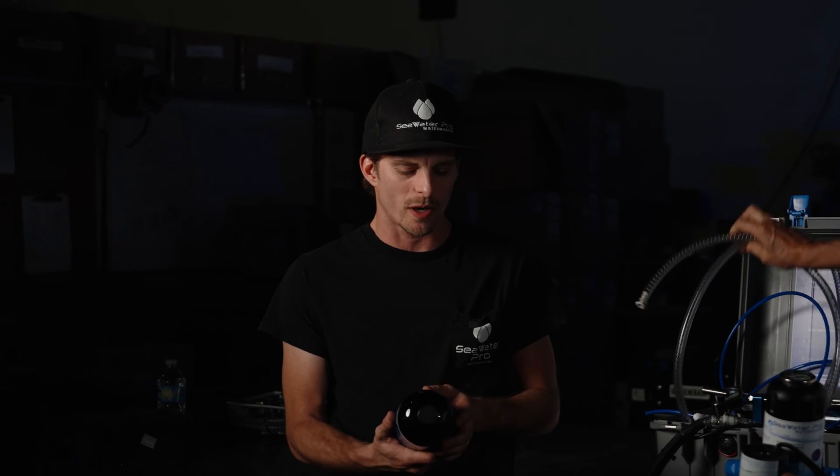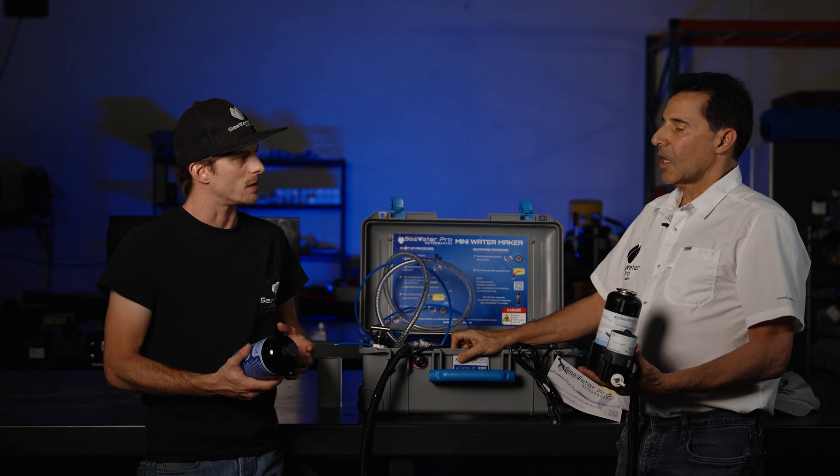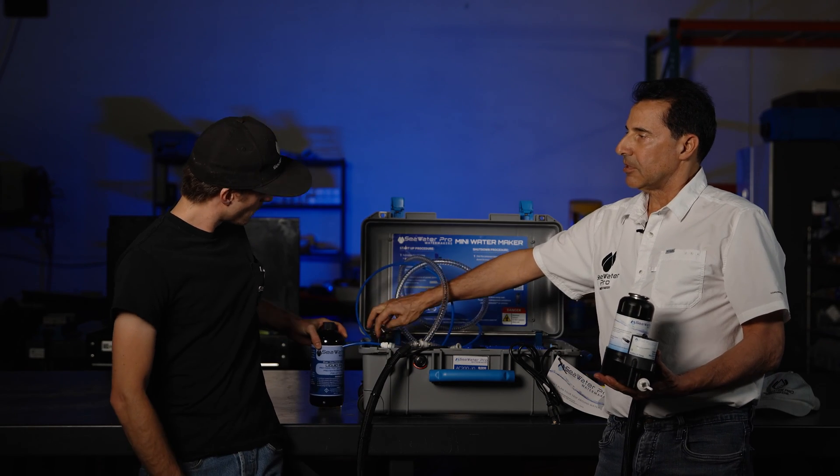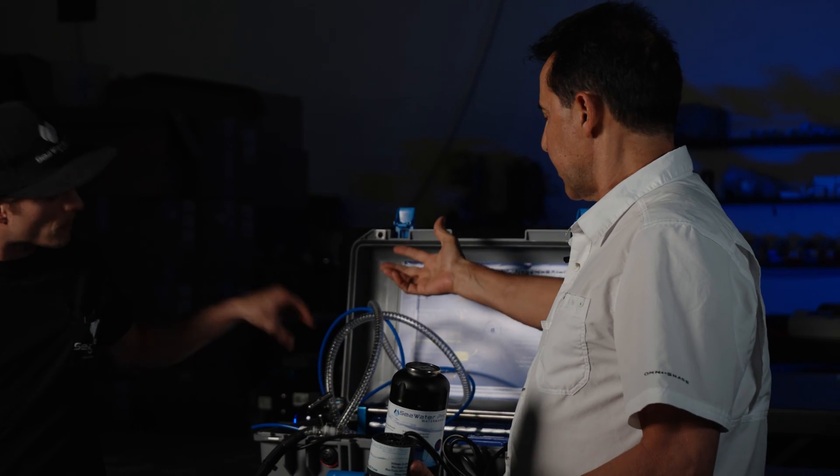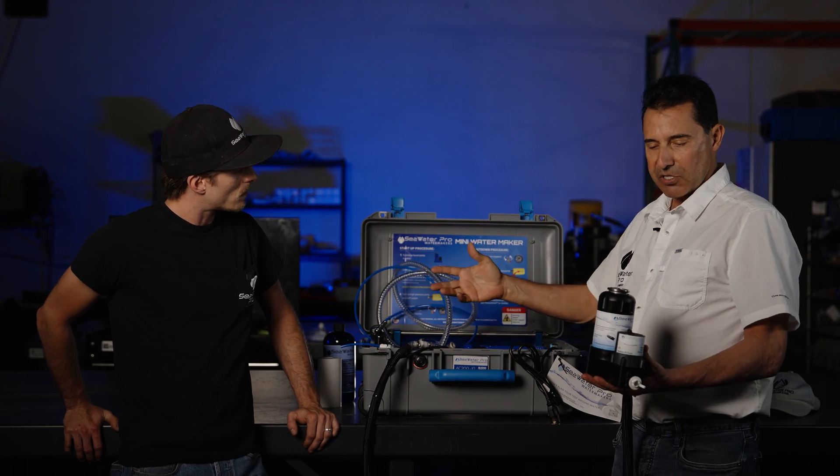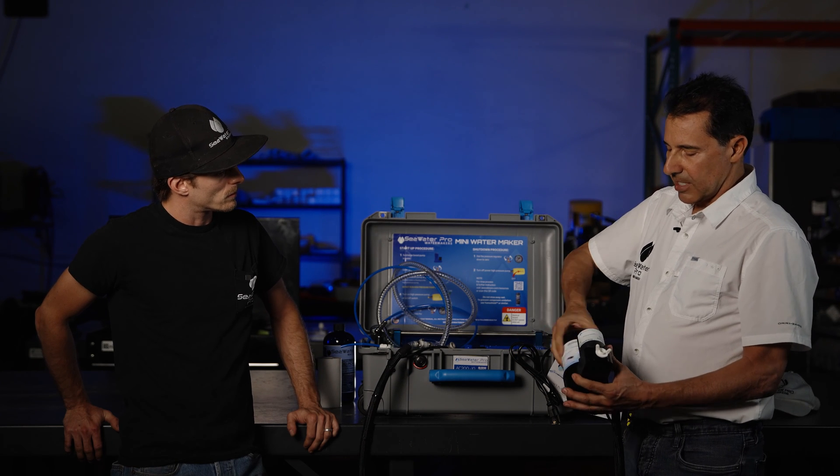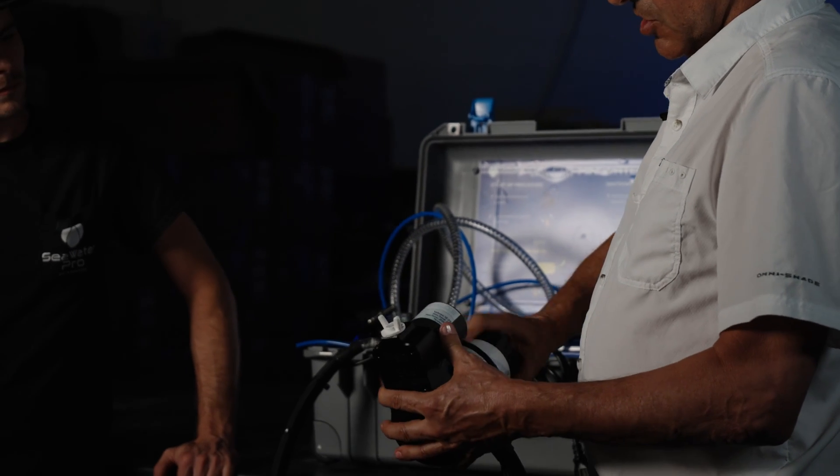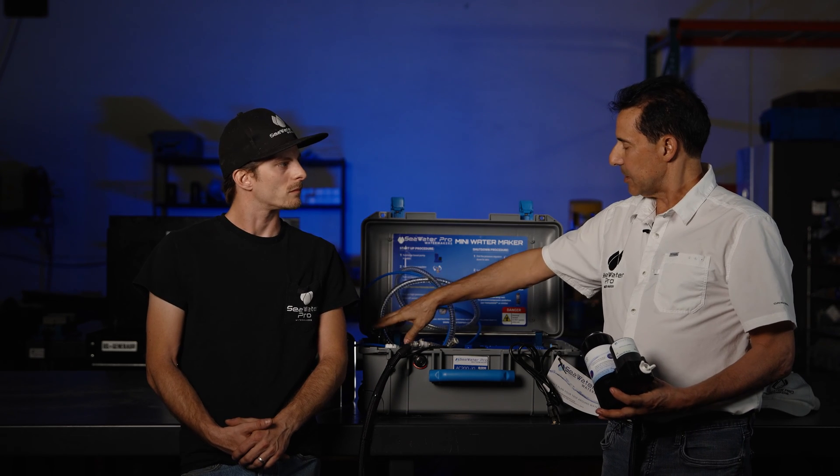So this preservative is pretty viscous. It's thick. So I'm assuming we're probably not going to want to pressurize this in the system. Yes, during the pickling process we want to keep the pressure down to zero. And same thing with unpickling. When we come out of storage after a few months or a year and you want to use the system now, take the exact same procedure. Place a new filter. Submerge this in the ocean. Turn on both pumps. Keep the pressure at zero for a couple of minutes and then start raising the pressure and start making water. That's all there is to it.